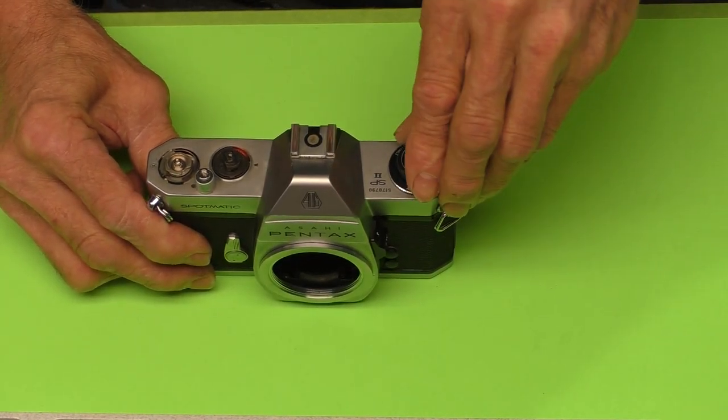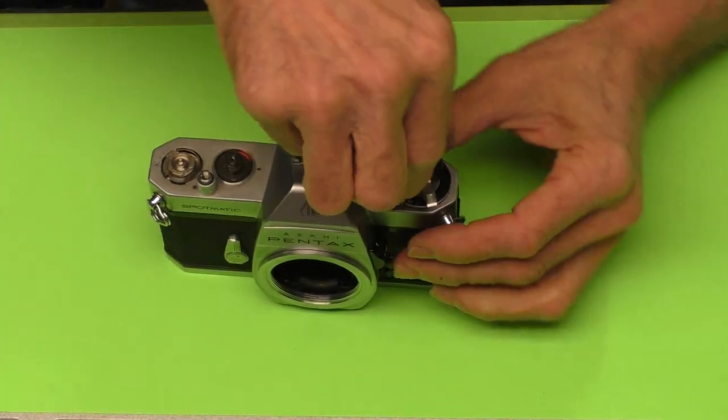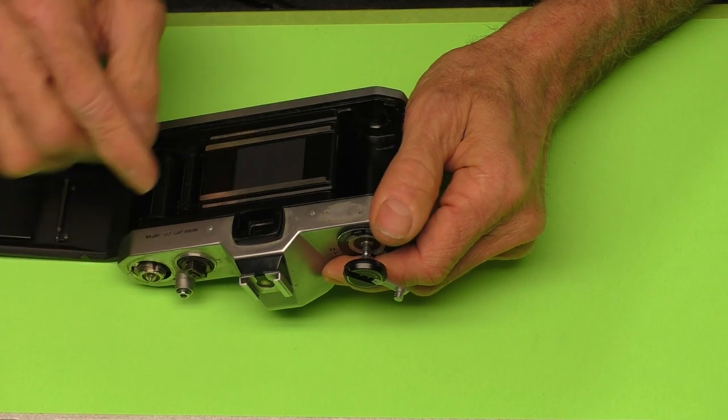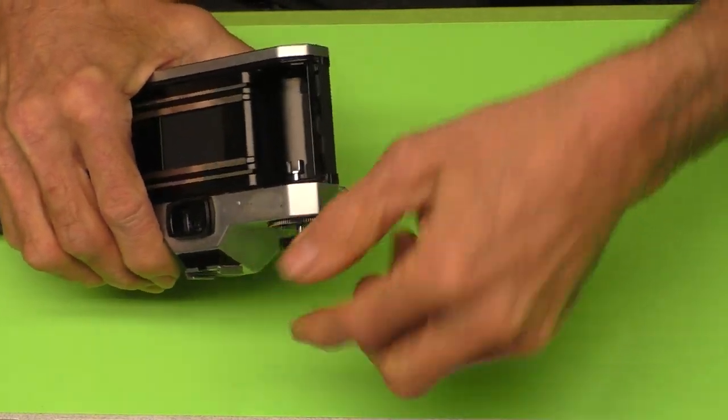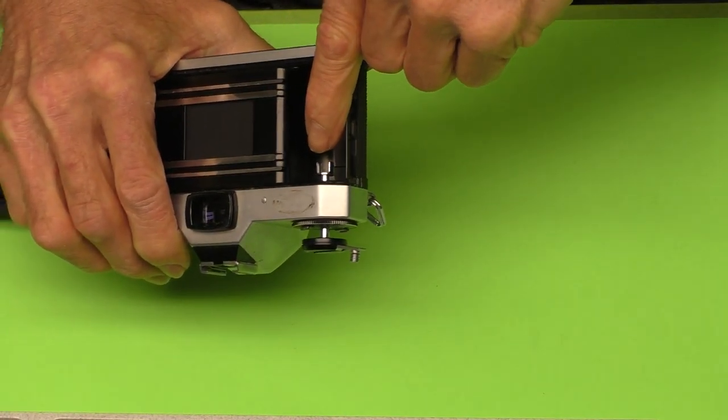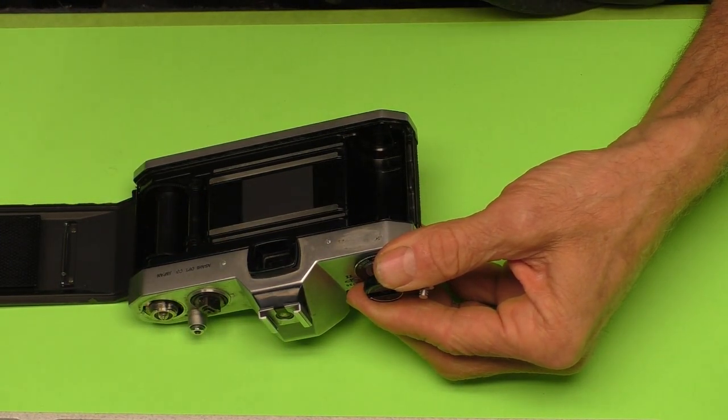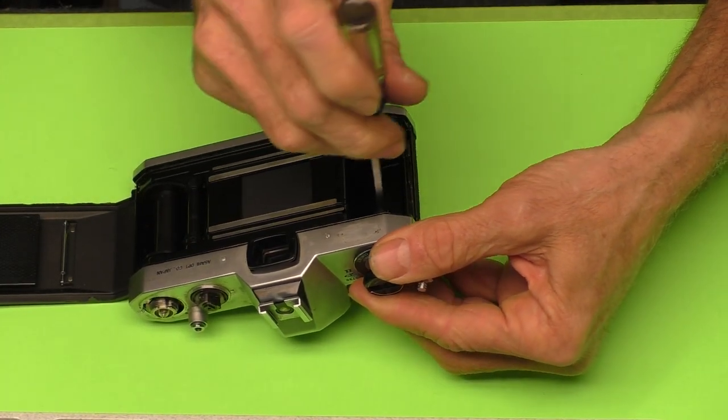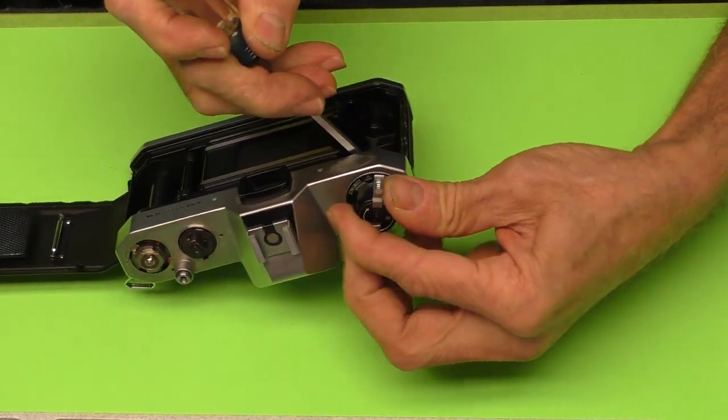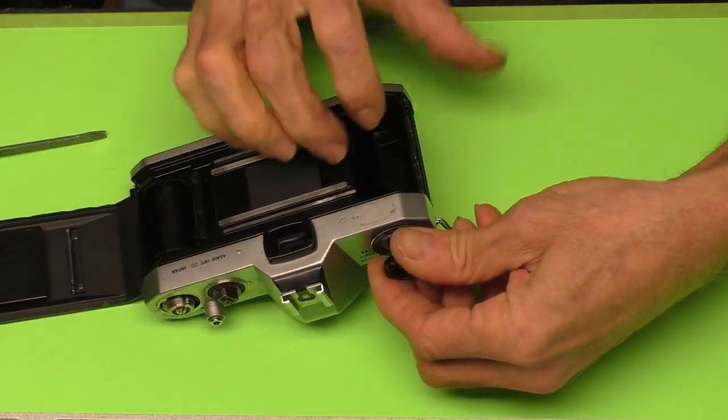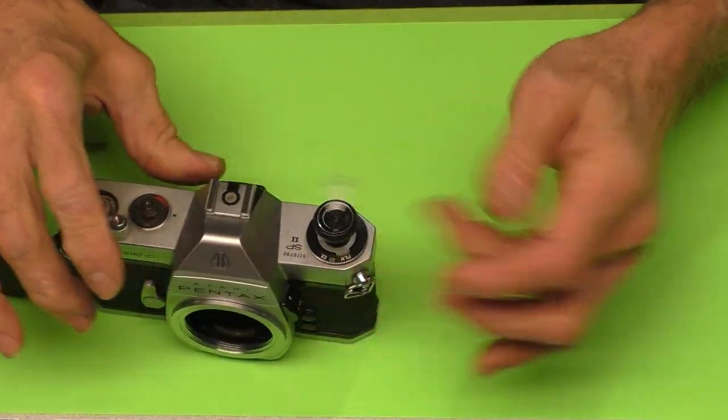Now we've got the rewind knob. Let's go ahead and pull that up. Open the back of the camera. And what we're going to do is get something in this slot right here on the rewind shaft. Just a suitable screwdriver that you can put in there. And then twist this right-hand thread.